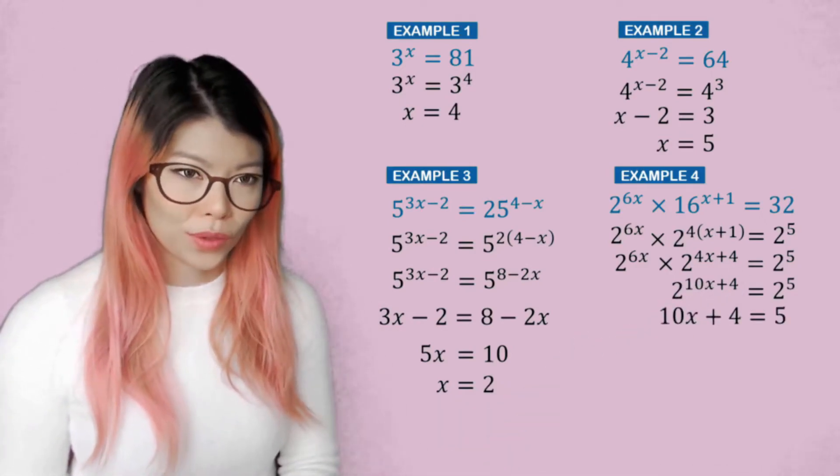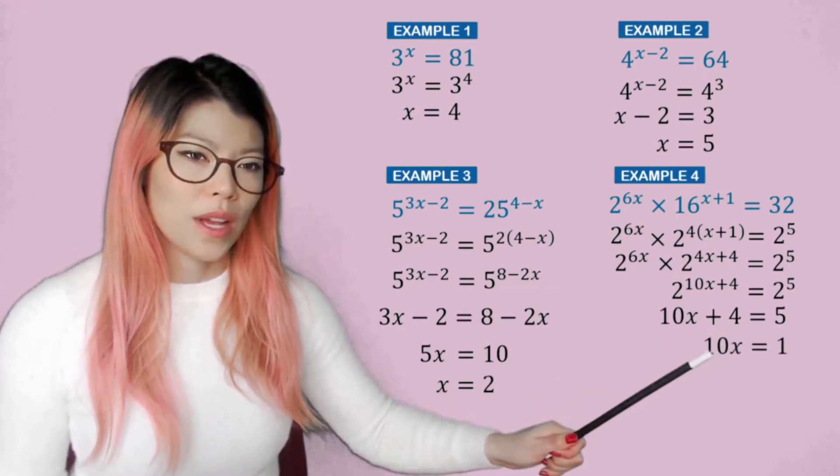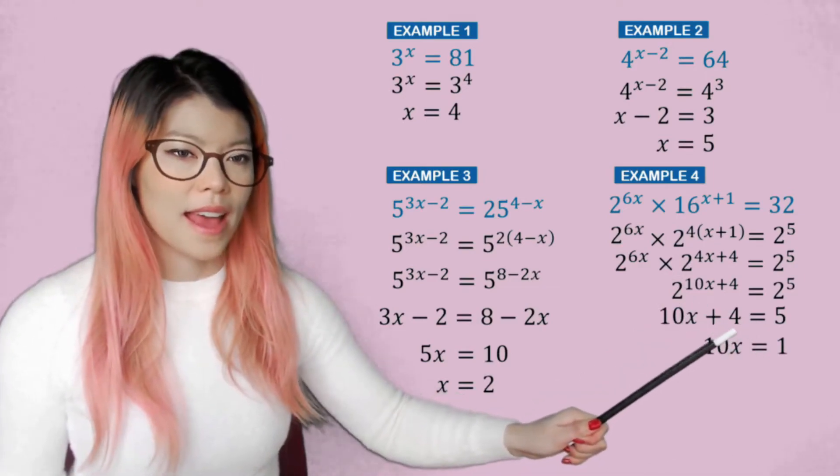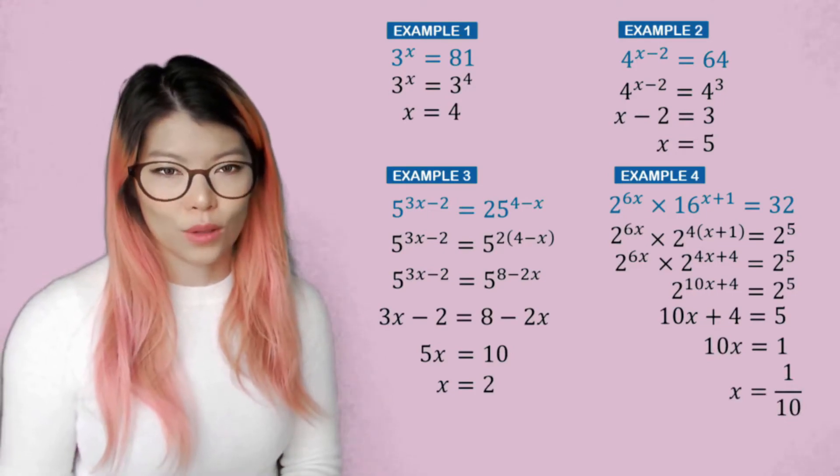And now we can equate the powers. So we have 10x plus 4 equals 5, minus 4 on both sides. We have 10x equals 1. And then divided by 10, we have x equals 1 over 10.